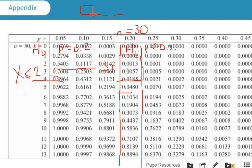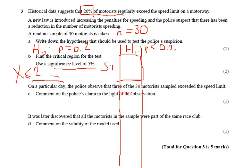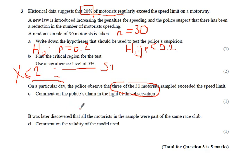So let's scoot back to questions and see where we're up to. Find the critical region for the test, it's x is less than or equal to 2. On a particular day, the police observed that 3 of the 30 motorists sampled exceeded the speed limit. Comment on the police's claim in the light of this observation. Well, 3 out of 30 is not in the critical region that we've found. So there is insufficient evidence to reject H0.